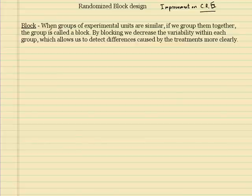So let's talk about blocks. When groups of experimental units are similar, if we group them together, the group is called a block. By blocking, we decrease the variability within each group, which allows us to detect differences caused by the treatments more clearly.